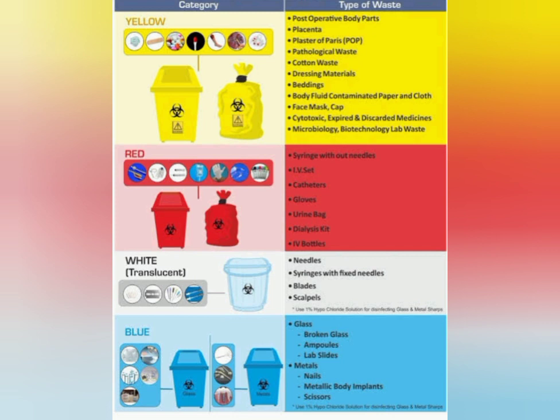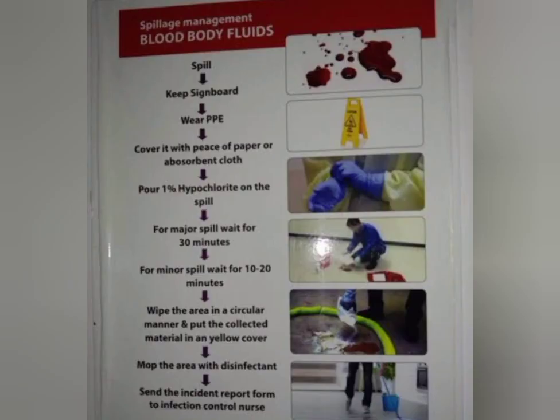The red bucket is for all plastic materials — catheter tubes, IV tubes, gloves — everything plastic. The yellow bucket is for soiled items with blood or body fluids. Glassware items such as ampoules and vials go in the blue bucket. Sharp needles or cut needles go in the white bucket. Every HWC staff member should know about biomedical waste management.